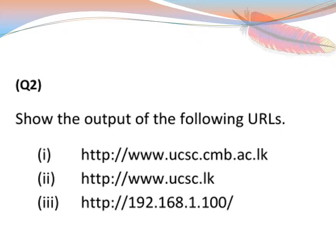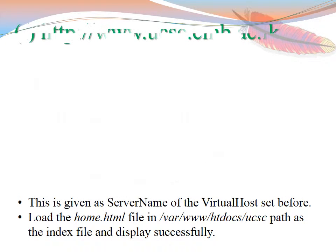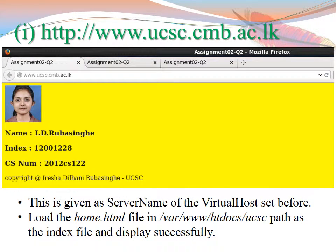This is the whole edited section in the httpd.conf file — these are the parts we edited and newly added. For the second question, we just have to show the outputs of the following URLs. If we configured the first question correctly, then these outputs we can get very easily. The content can be very different — it's your choice. What matters here is whether the page loads correctly or not.